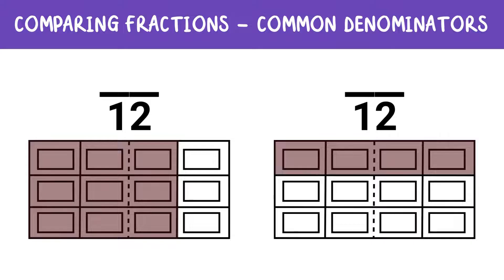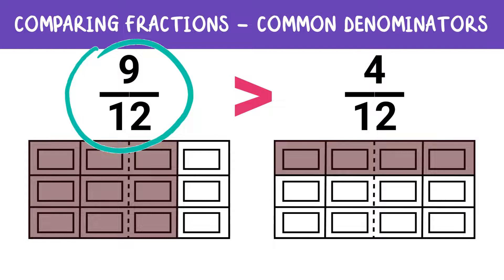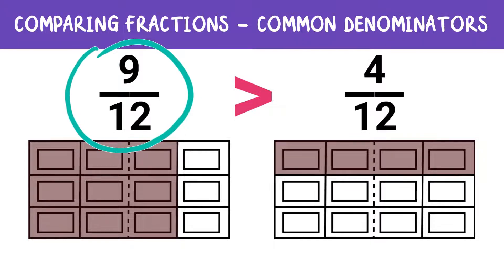Now let's compare them. The first chocolate bar has 9 pieces remaining, and the second has 4 pieces. Which one has more chocolate? You got it! 9 twelfths is greater than 4 twelfths because 9 is larger than 4. When the denominators are the same, just compare the numerators to see which fraction is bigger or smaller.